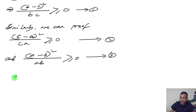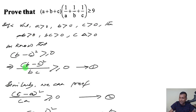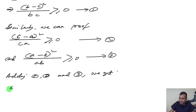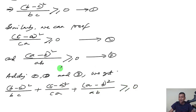Now adding equations 1, 2, and 3, we get (b - c)²/bc + (c - a)²/ca + (a - b)²/ab ≥ 0, because each term is a positive number and the sum of three positive numbers is always positive.